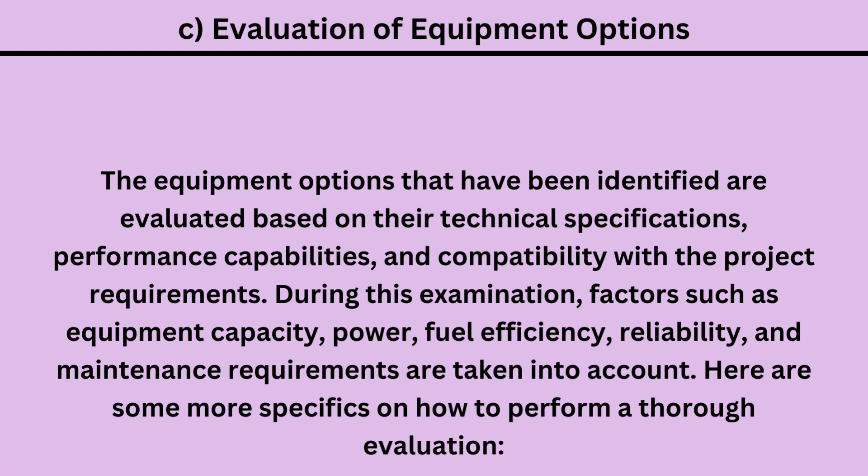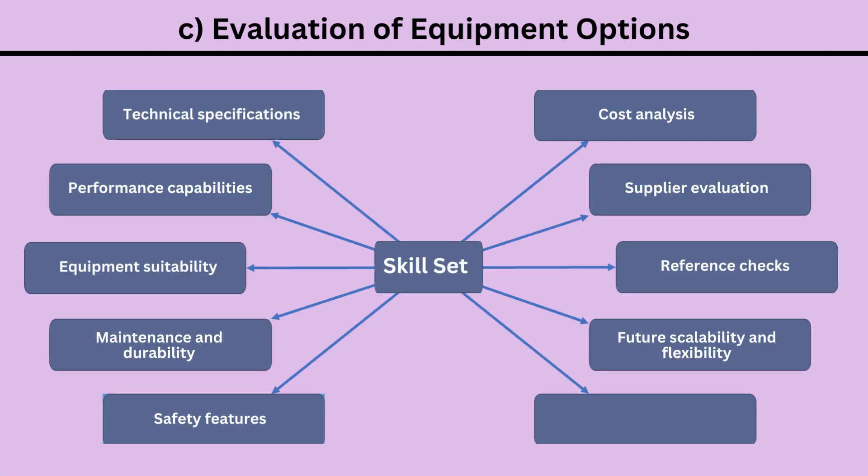Here are some more specifics on how to perform a thorough evaluation of equipment options: 1. Technical specifications. 2. Performance capabilities. 3. Equipment suitability. 4. Maintenance and durability. 5. Safety features. 6. Cost analysis. 7. Supplier evaluation. 8. Reference checks. 9. Future scalability and flexibility.